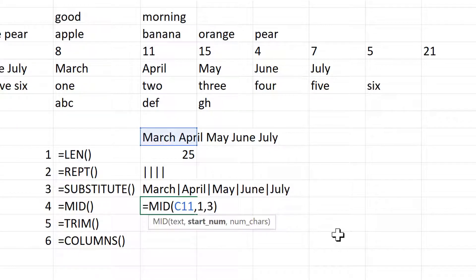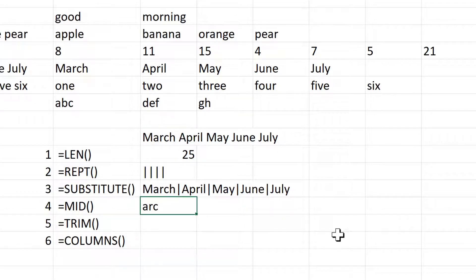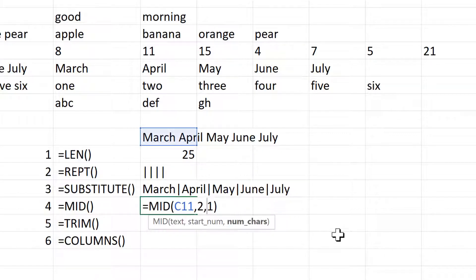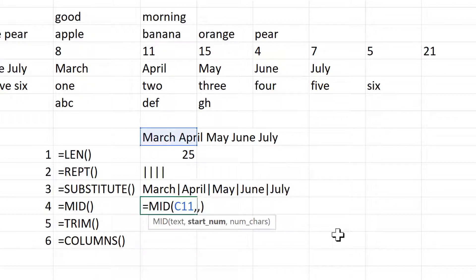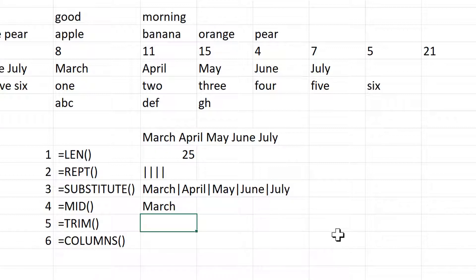Then if I change the start number to two, I start counting from position two instead and get ARC. Now if I change this to three, the start number is three and I only want one character, so I get the letter R, which is the third character along. And then if I change the start number to one and the number of characters to five, I end up with the whole of the first word.